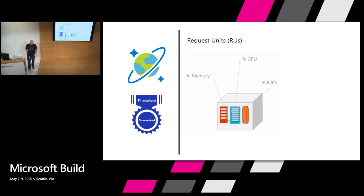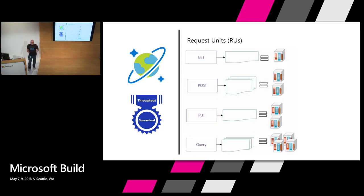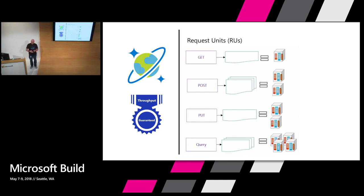Has anyone heard of a Request Unit and scratched their head? It's really just a normalized way of saying this is what it takes to perform an operation — the memory, CPU, and I/O required. A simple GET operation might take only one or two request units, whereas a more complex query can take multiples. Cosmos DB provides a calculator that lets you estimate your request units — you can upload documents and indicate reads and writes. If you exceed your provisioned throughput, you get information about how long to wait to retry, as well as what you can re-provision your throughput to in order to meet the demand.